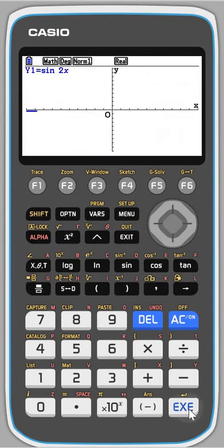So if I want to draw this graph, let's see what happens here. Looks like rubbish, doesn't look like a sine graph, and that's because my view window is all wrong.